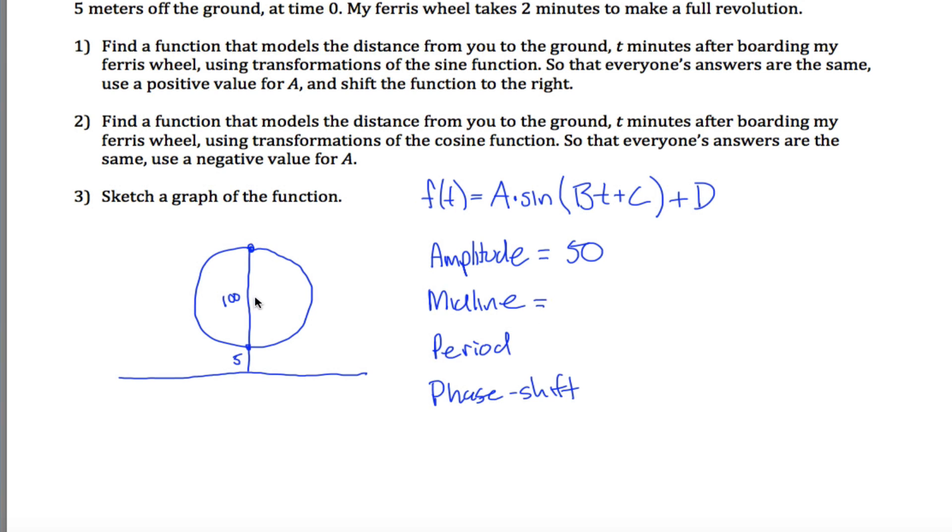The midline is kind of your average height, and you might think it's 50, but it's not because we're 5 feet off the ground. The midline is defined to be the highest plus the lowest divided by 2. So 105 plus 5 divided by 2 is 110 divided by 2, which is 55. And the period is given to us to be 2 minutes.